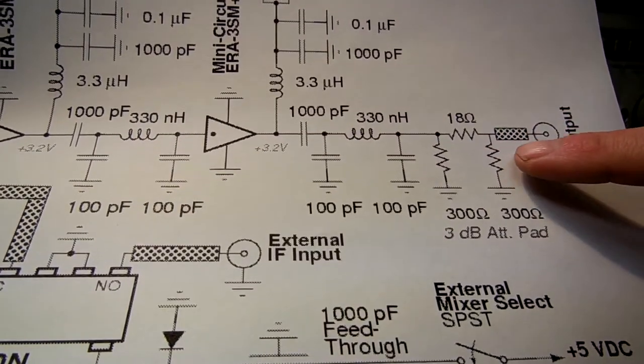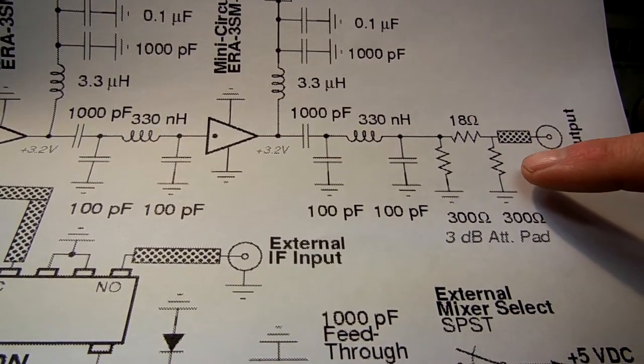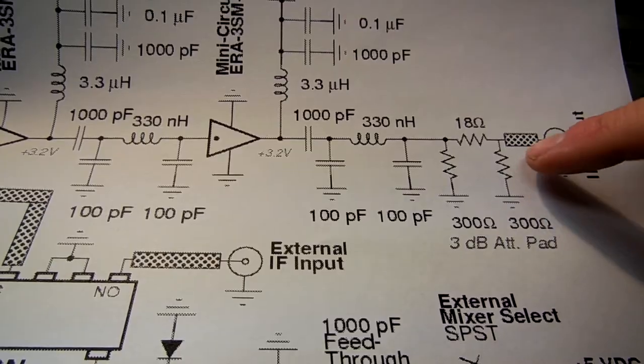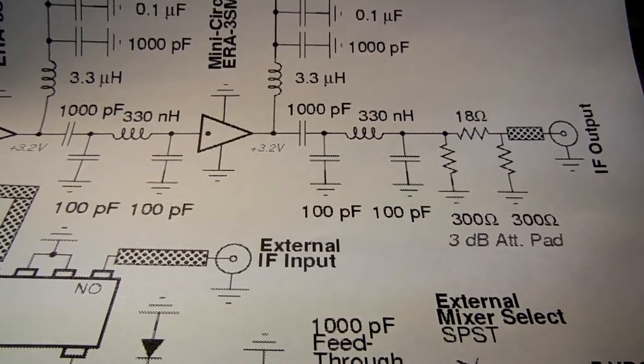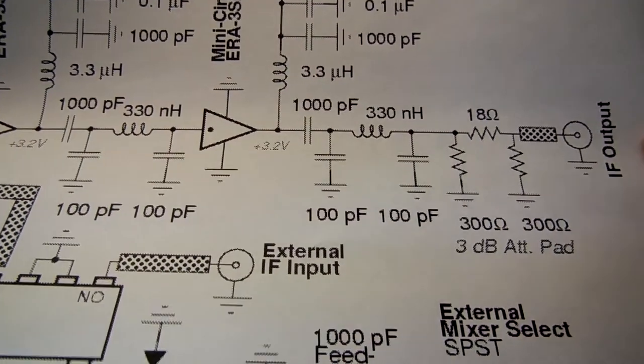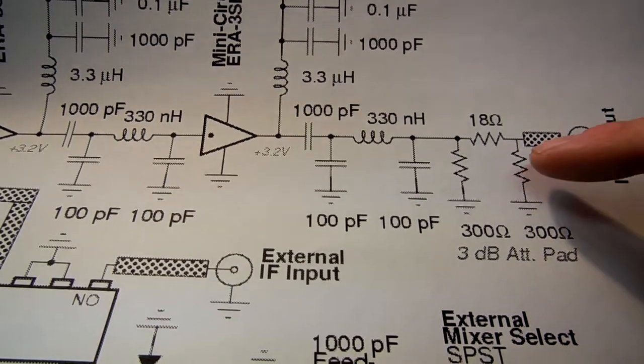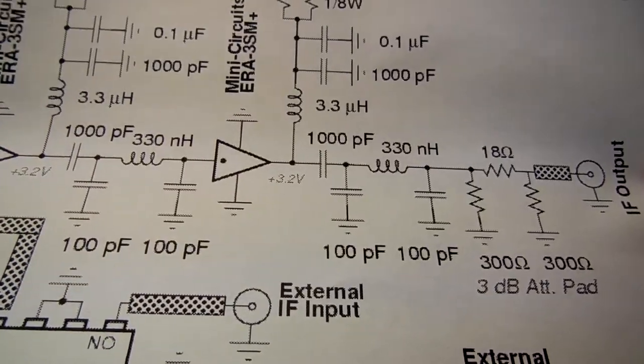I added a 3 dB attenuator on the output. This just forces the amplifier chain to see 50 ohms. The resolution filter stage will be further down the line, and that tends to not be 50 ohms exactly, but by adding the 3 dB pad it kind of forces everything to 50 ohms.